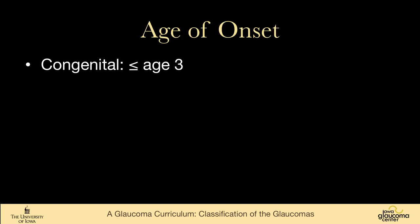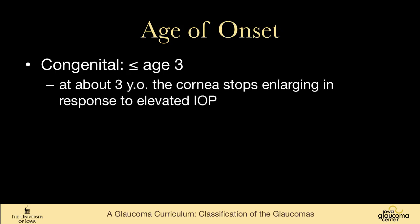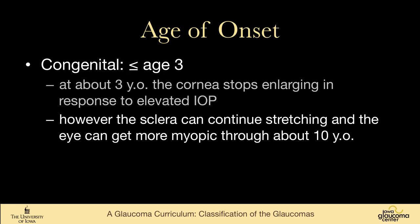We usually consider glaucoma to be congenital if it occurs at three years of age or less, because at about three years old the cornea stops enlarging in response to elevated intraocular pressure. The eye itself can continue to grow — the sclera can grow up through about age ten, so the patient can get more myopic if the glaucoma is poorly controlled. But usually age three is the cutoff for congenital glaucoma.